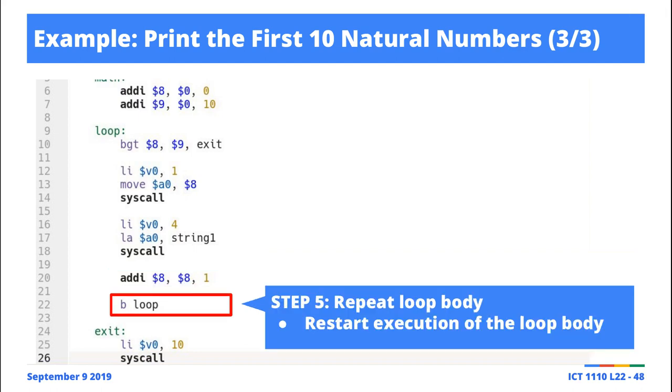And then repeating the body here, you notice, is as easy as just saying, go back to this label. Loop. This is how we are repeating the body. Repeating the execution of these instructions is just saying, as the last statement in the loop body, branch to the label of the loop itself.